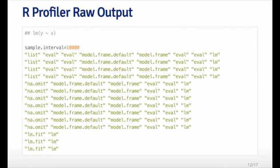Here's a quick example of the raw output that comes from the profiler. Generally speaking, you will not ever use this output directly, but it's interesting to look at. I'm calling the LM function with a univariate outcome and a univariate predictor. Each line of this output is the function call stack — at the very right is the top and at the very left is the bottom. So at the right, you can see LM was called, LM called eval, eval called eval, eval called model.frame, which called model.frame.default, which called eval and then list. All these functions call each other, so the function call stack goes down fairly deep.